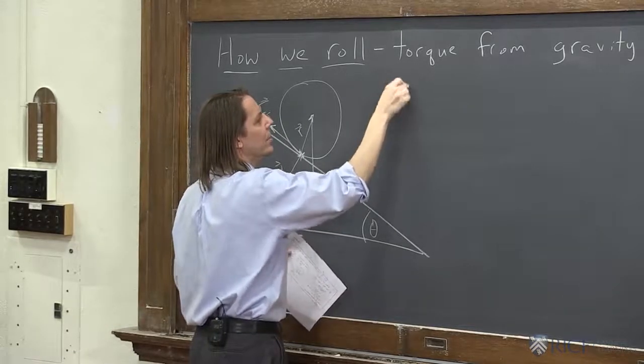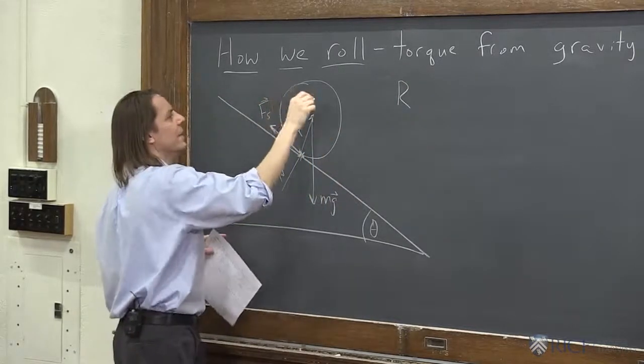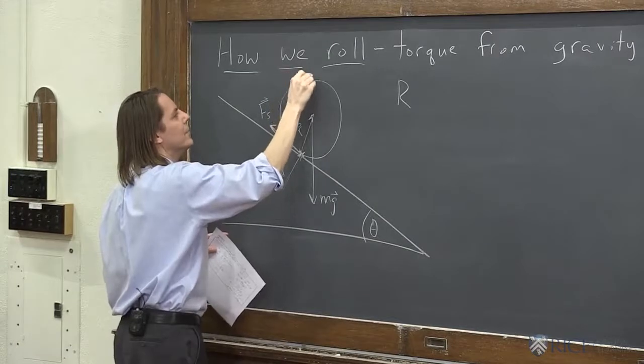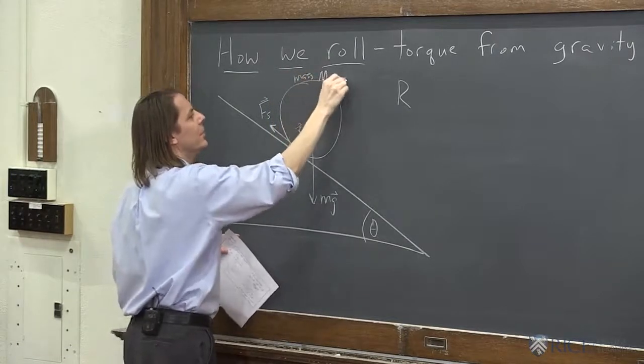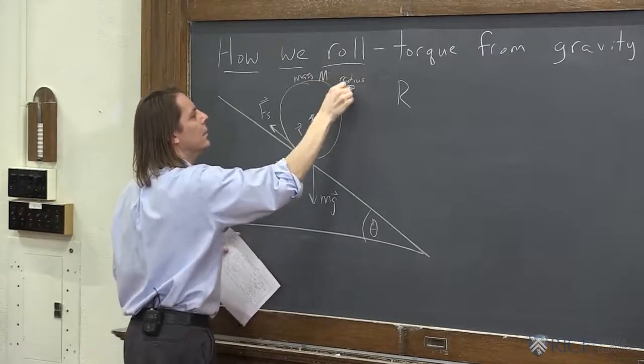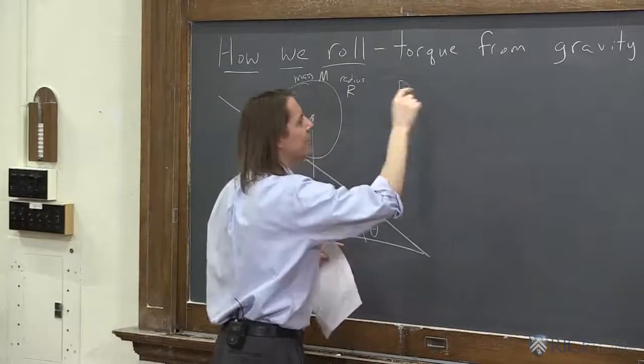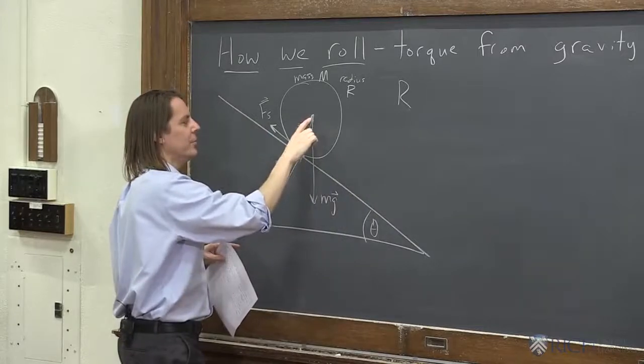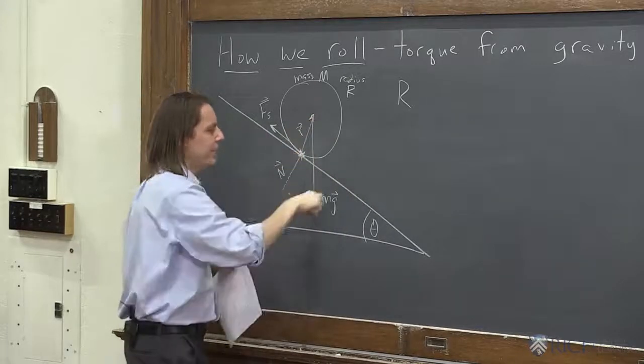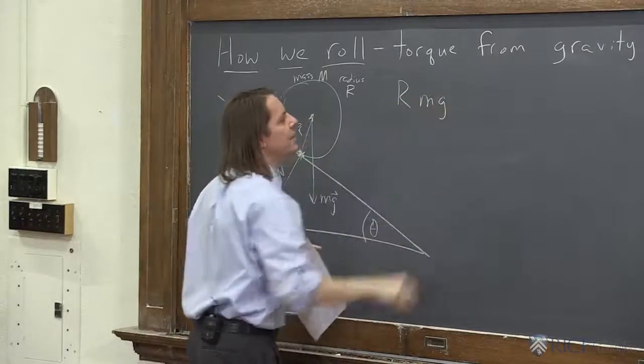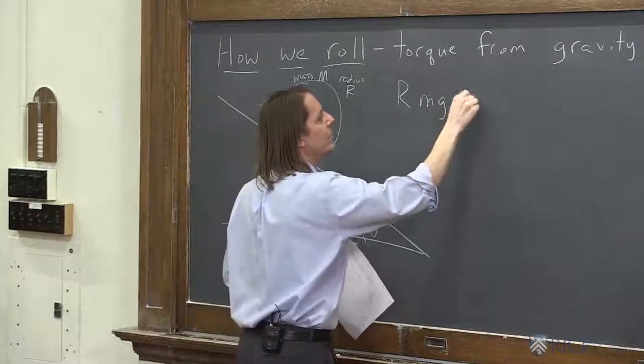Now you might be tempted to say, well we've got to get a component down the ramp. But you don't really, right? Because if it's R cross F, we can just write those vectors. So here's the vector R, like that. It is R from the axis to the center of the disk. And F is just the Mg straight down. So we can do that cross product. We don't have to break anything into components.